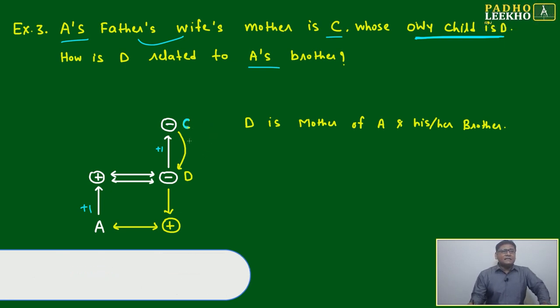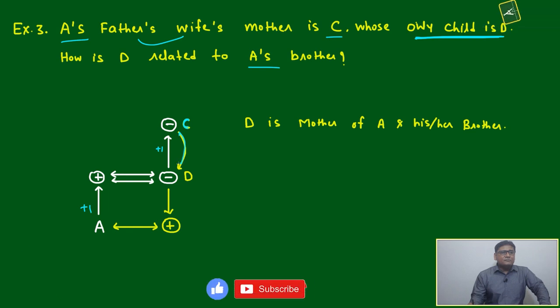Whose only child is D means D is the child of this one, means this lady is D. How is D related to A's brother? A's brother, here it will be. How will it be related?